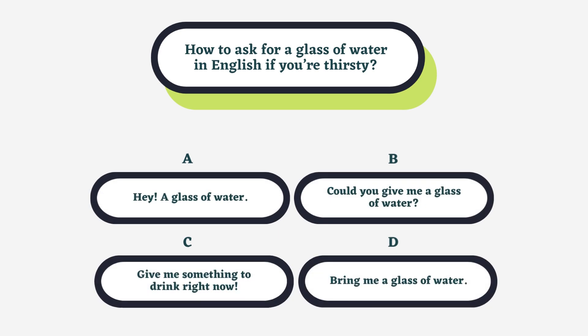How to ask for a glass of water in English if you're thirsty? A. Hey! A glass of water, B. Could you give me a glass of water? C. Give me something to drink right now, D. Bring me a glass of water.